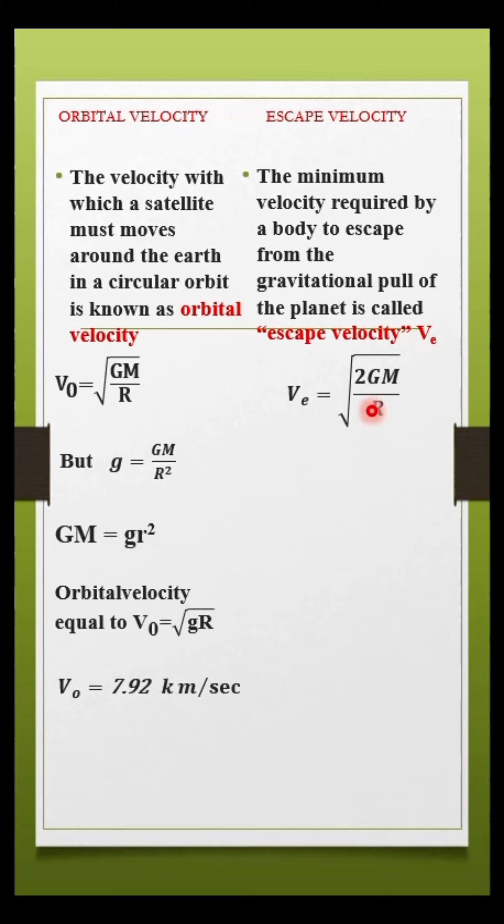In the same way, we can substitute the values to get the escape velocity as vₑ = √(2gR). Substituting the values, we get vₑ = 11.2 km/sec.